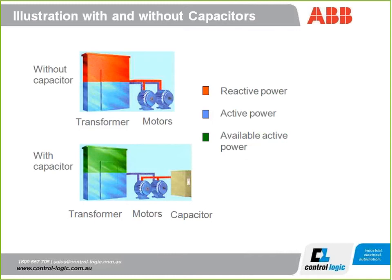This slide expands on that. The top half shows a motor control centre with two motors but without any capacitor bank — so there's a lot of reactive power shown in orange. If we introduce power factor correction, i.e. capacitors to produce local reactive power, we've suddenly eliminated all that reactive power in the MCC. We've actually now got more available active power on site.